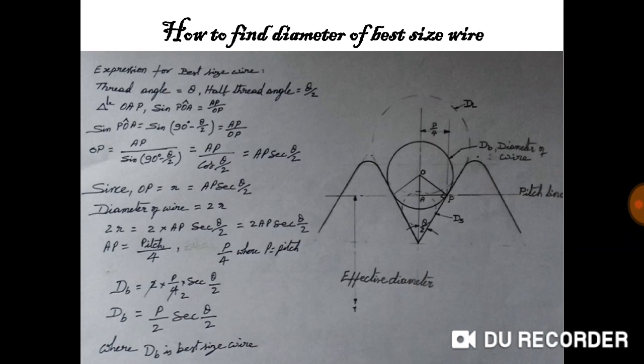While measuring the effective diameter, if the diameter of the wires is smaller or larger, will it be okay? No, not at all — it will lead to error in measurement. If the diameter of the wire is smaller, as shown in the diagram as ds, it contacts below the pitch line. If the diameter of the best size wire is not used and the wire used is larger, then it contacts above the pitch line. Hence, the best wire is the one which contacts the pitch line, and it is to be used for measurement.